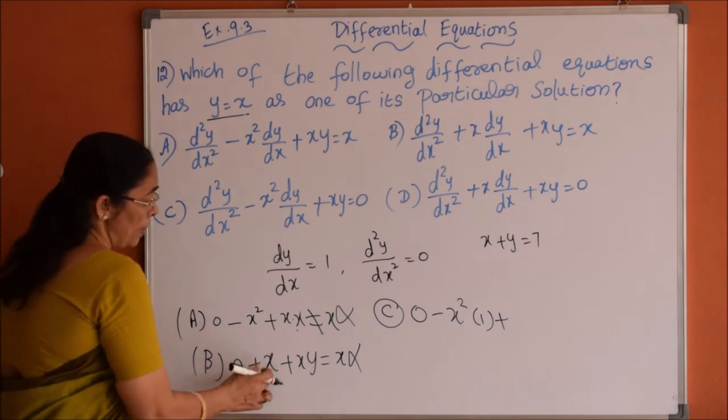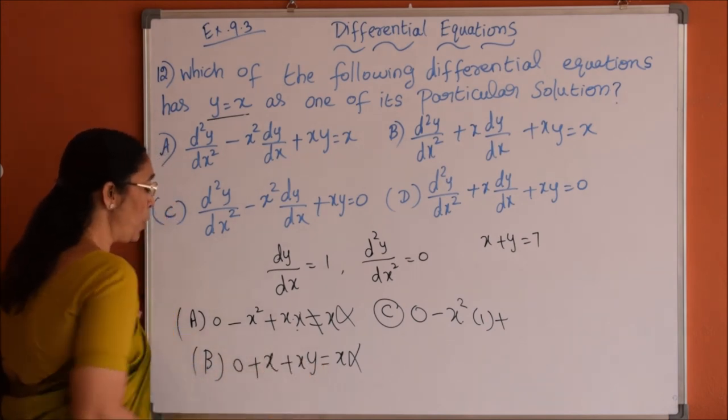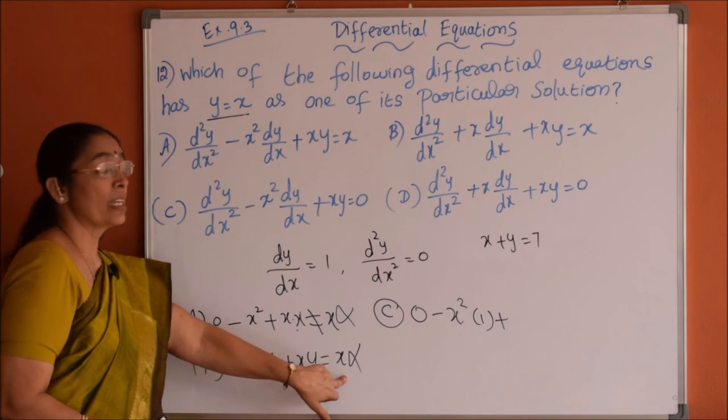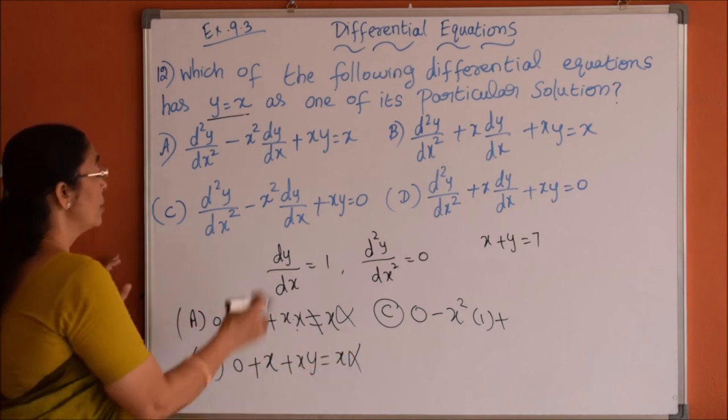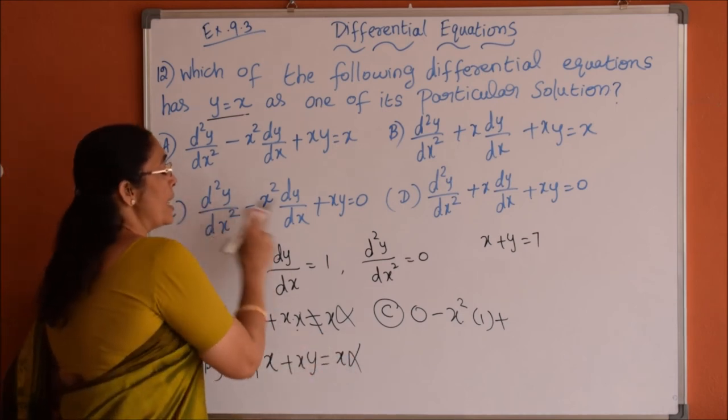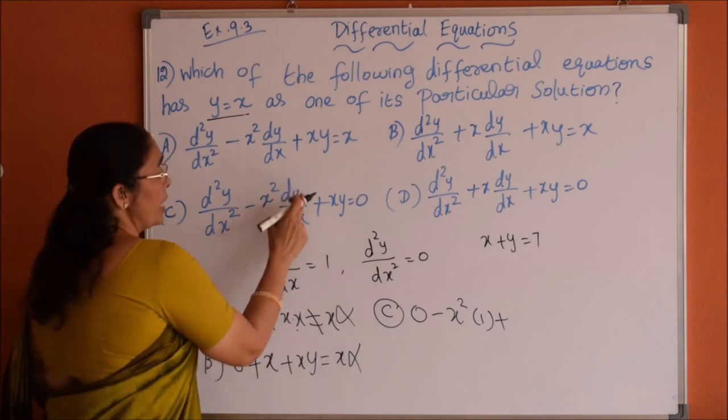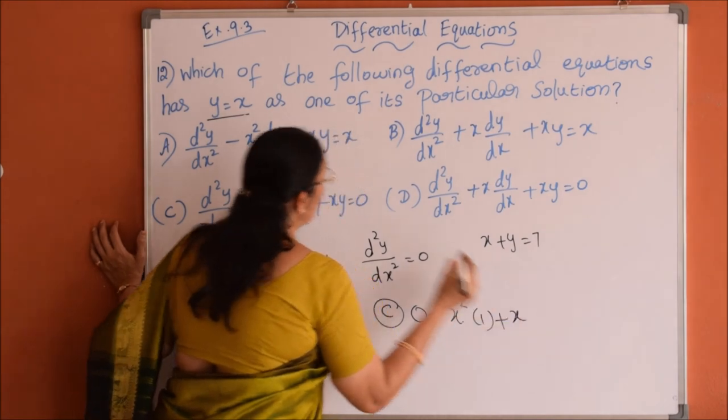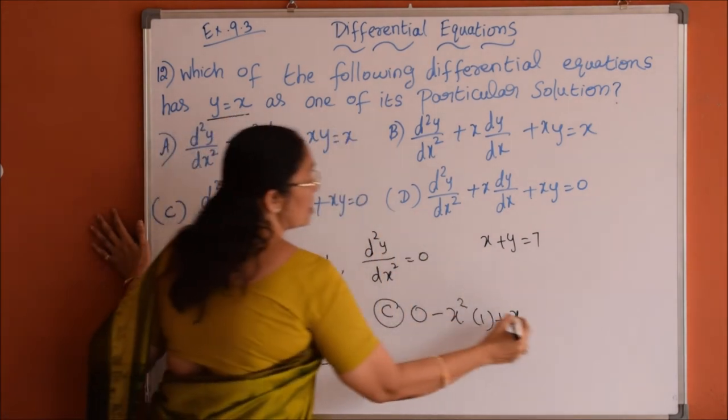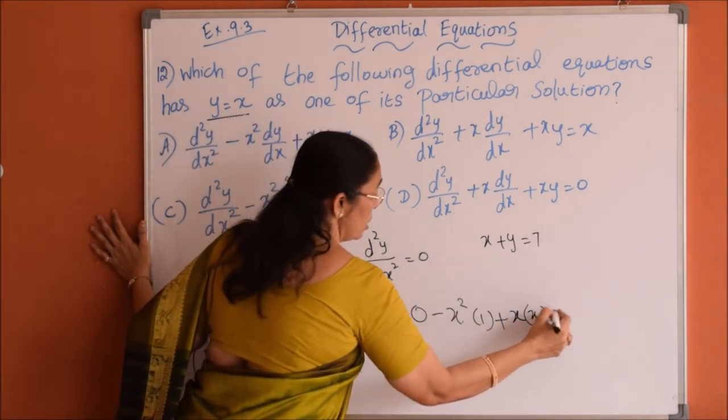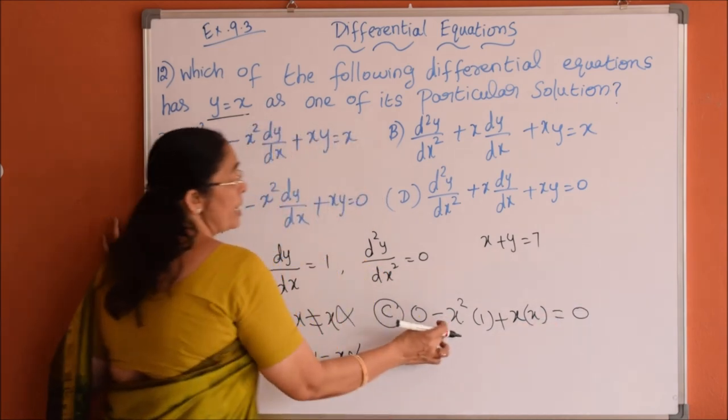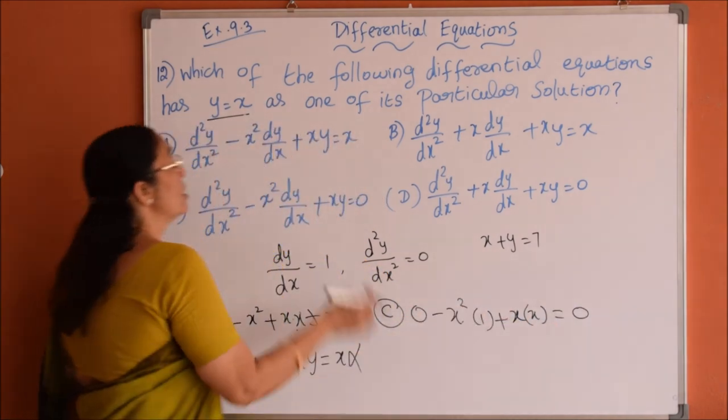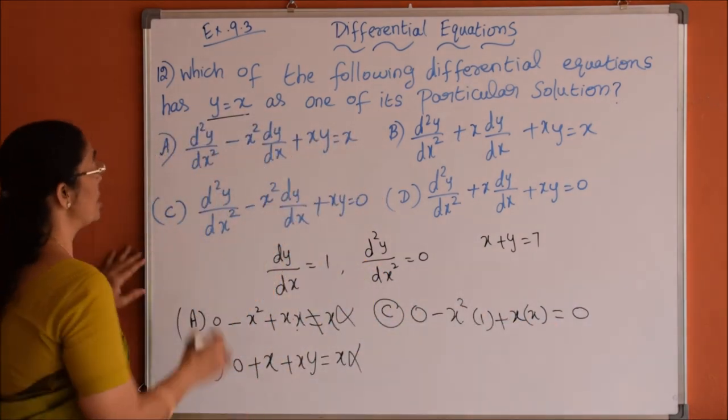Coming to second option, plus x plus x square, it should be 2x square, so right hand side is given x, so ruled out. Third option: d square y by dx square is 0 and minus x square into dy by dx is 1 plus x into y. Y value is here x, so x into x which equals 0, minus x square plus x square is 0. So option C is correct.